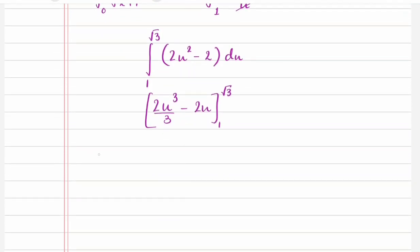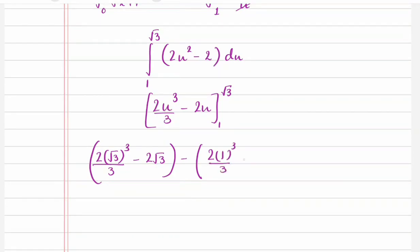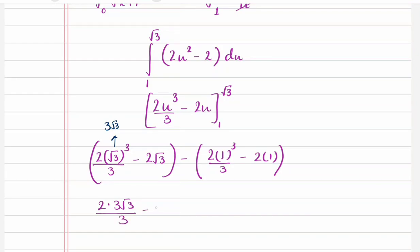Let's put the limits in. That gives us 2 times (root 3) cubed over 3 minus 2 root 3, take away 2 times 1 cubed over 3 minus 2 times 1. Simplifying, we get 2 times 3 root 3 over 3 minus 2 root 3, take away 2 over 3 minus 2.